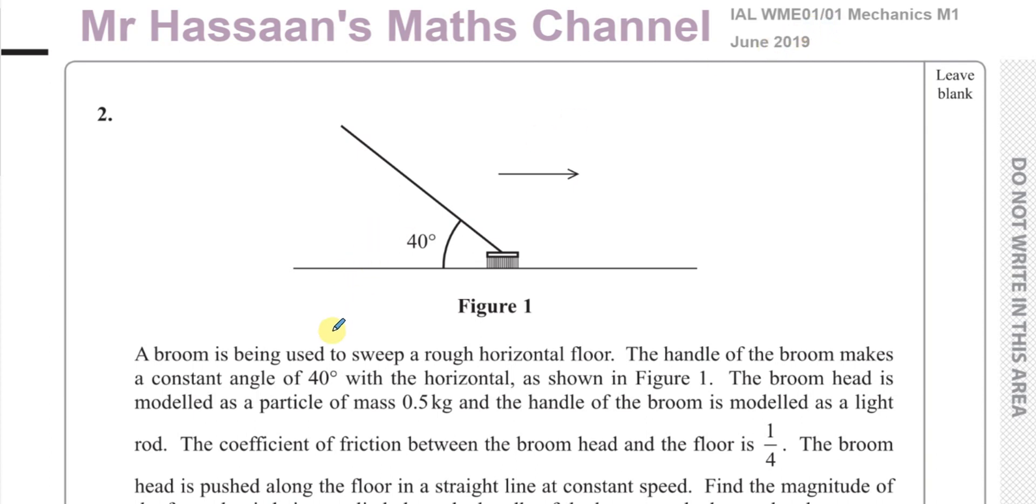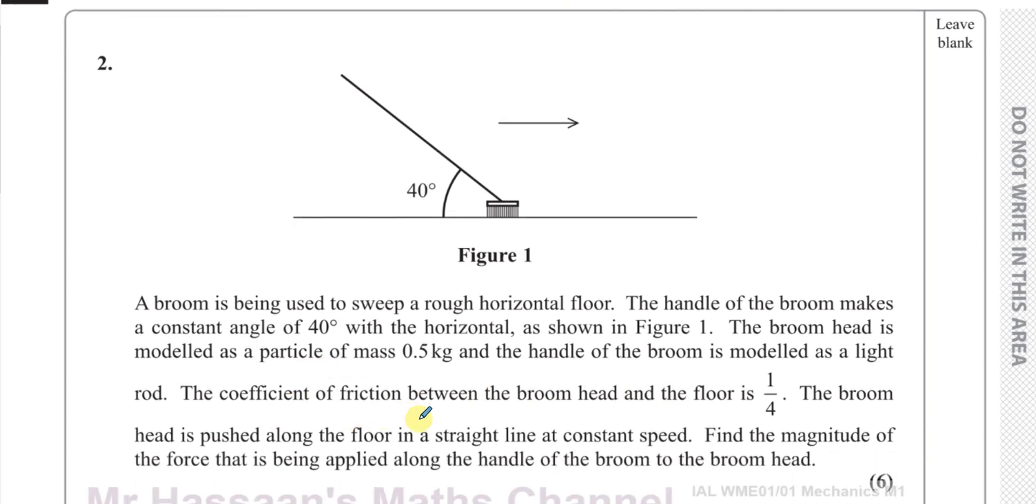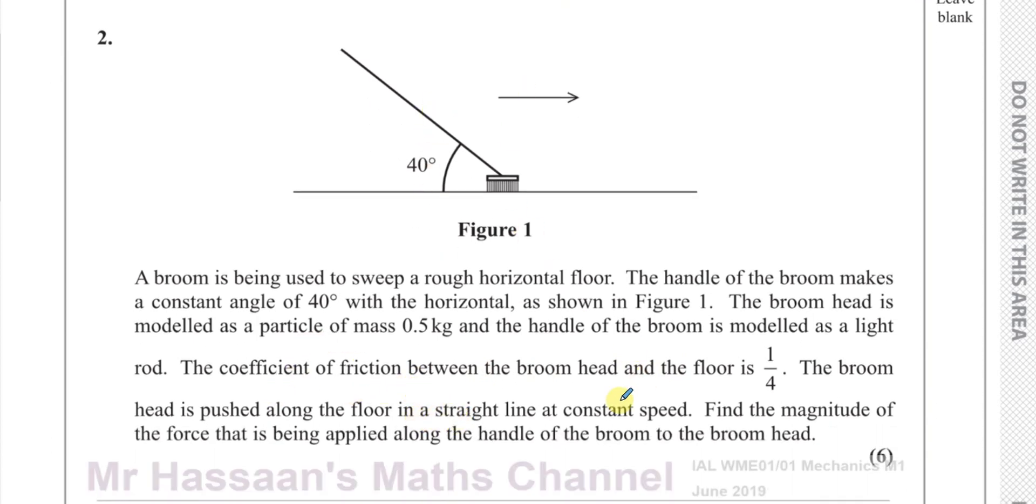This question is about a broom which is being used to sweep a rough horizontal floor. The handle of the broom makes a constant angle of 40 degrees with the horizontal as shown in figure one. The broom head is modeled as a particle of mass 0.5 kilograms and the handle of the broom is modeled as a light rod. The coefficient of friction between the broom head and the floor is one quarter. The broom head is pushed along the floor in a straight line at constant speed. Find the magnitude of the force that is being applied along the handle of the broom to the broom head.